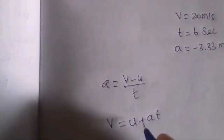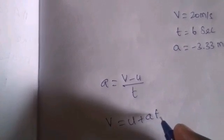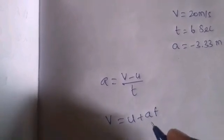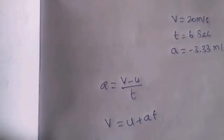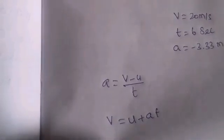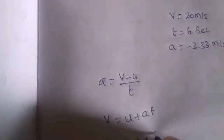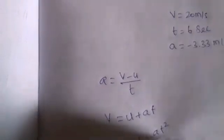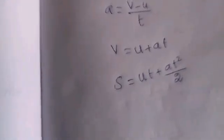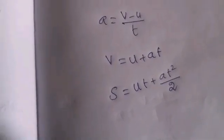This is v. Integrate to get distance traveled. Distance s is equal to ut plus at squared by 2. Integration: ut plus at squared by 2.